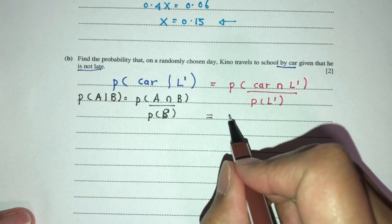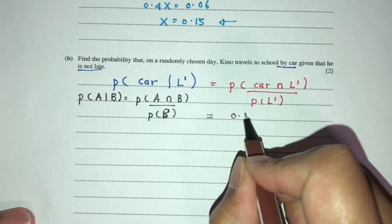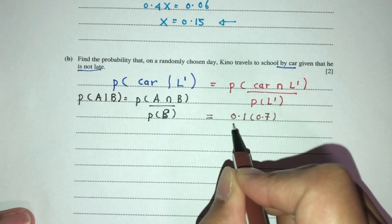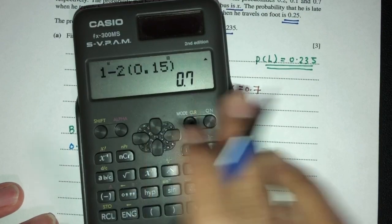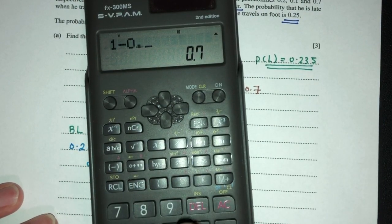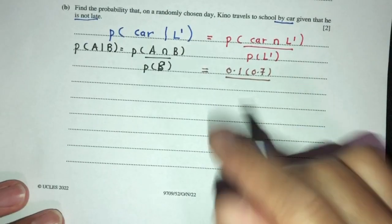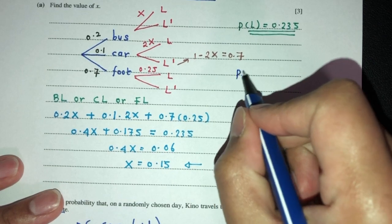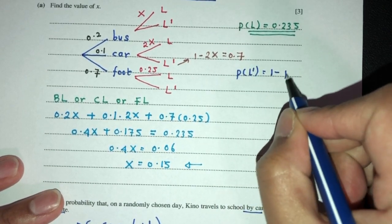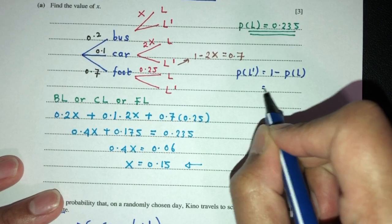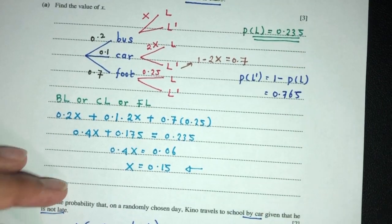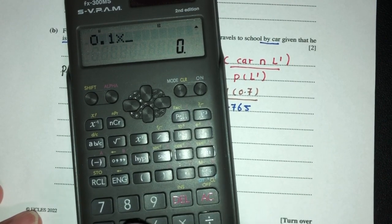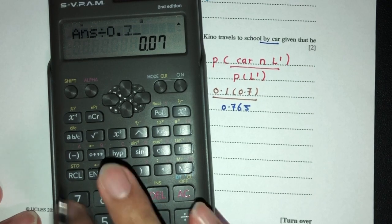So by car and not late, by car is 0.1, and not late is 0.7. Divide by being not late. Now we know from part A already. He is late is 0.235, not late is 1 minus 0.235, that should become 0.765. So to find the probability that he is not late, we can just take 1 minus the probability that he is late. That will become 0.765. Just replace back in here, you will have your answer as well.